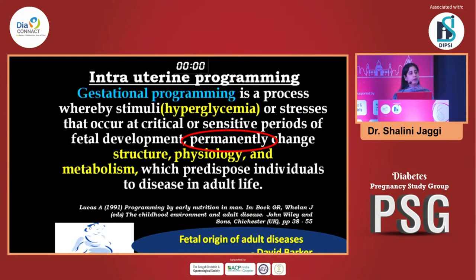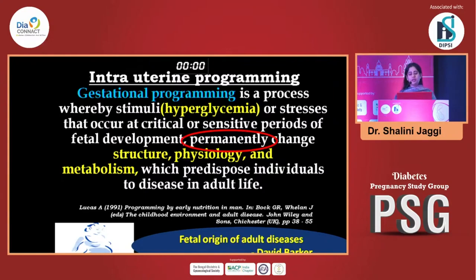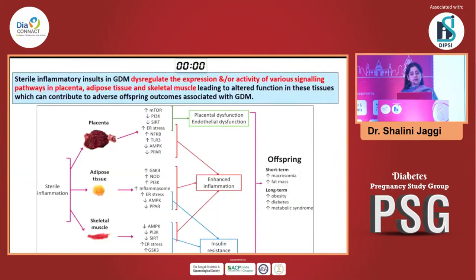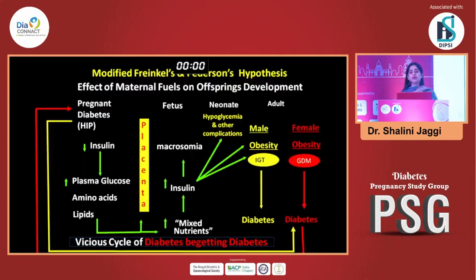This is the Barker hypothesis — the fetal origin of adult disease — which says that the diabetes epidemic is not only because after birth we are getting fat; it is because we are born with that priming. Gestational programming is a process where hyperglycemia or other stresses occurring at a critical or sensitive period of fetal development permanently change the structure, physiology, and metabolism, predisposing these individuals to disease in adult life. Maternal overnutrition can produce epigenetic changes in the baby's body. When this child grows up, it is already primed intrauterine to have an increased risk of obesity, diabetes, and cardiovascular disease in offspring. All these inhibitory effects on insulin signaling at the hepatic, adipose tissue, and skeletal muscle levels produce placental dysfunction, endothelial dysfunction, enhanced inflammation, and insulin resistance; the baby also inherits the tendency to develop multiple NCDs.